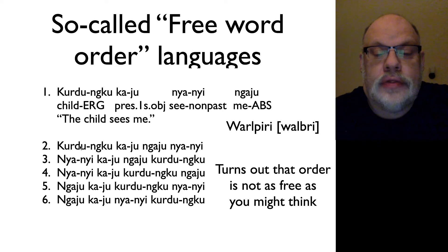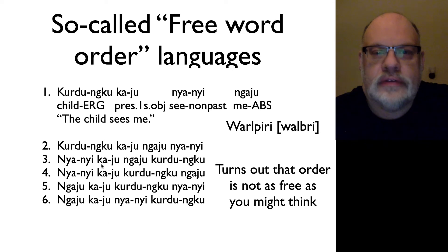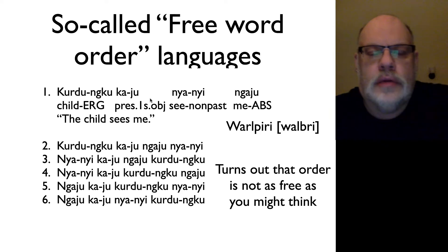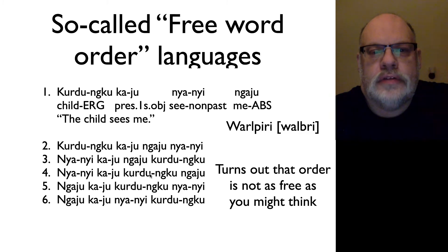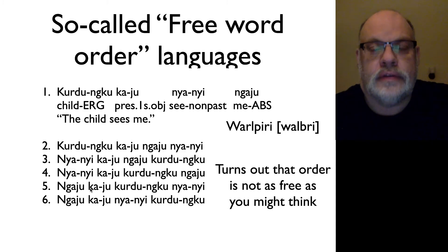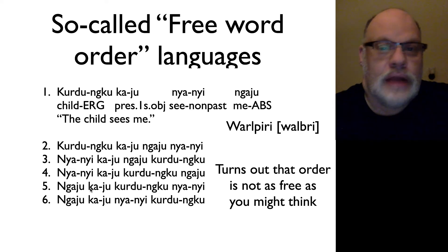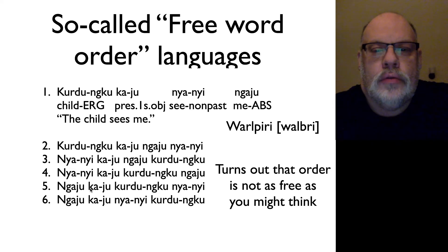But other than that, the words can appear in any word order at all. So this is the origin of the term free word order languages. But when you investigate these languages a little more deeply, you find that these sentences don't exactly mean the same thing. The ways in which they differ is they differ in terms of how speakers and listeners perceive the items in the sentence relative to the discourse or the surrounding conversation, with respect to what's new information and what's old information.